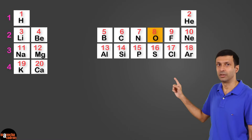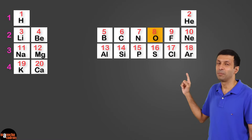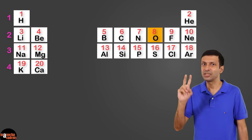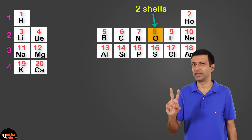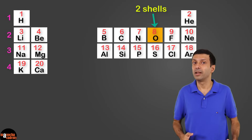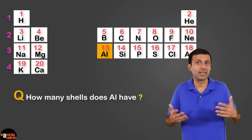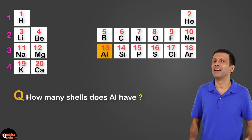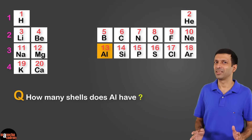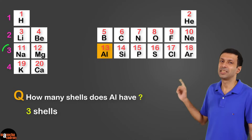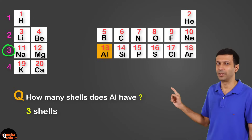Now if you look at oxygen, it's in period 2, so it contains 2 shells. Similarly, how many shells does aluminium have? That's right, 3 shells, since it's in period 3.